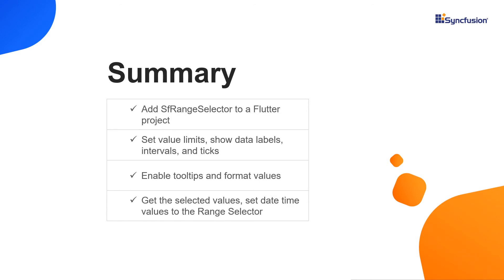That's it. Let me summarize the main points of this video. You saw how to add the Syncfusion Flutter Range Selector widget to a Flutter project. You learned how to use a chart widget as the Range Selector's child widget. Then, you saw how to set value limits, show data labels, intervals and ticks, enable tooltips, and format the Range Selector values. Also, you learned how to get the selected values and move the thumb in a discrete manner. Finally, I showed you how to set date-time values to the Range Selector. You can download this working example from the GitHub link in the video description below. I've also provided a link where you can check if you are eligible for our community license, which gives you a free license key to use our Flutter products.